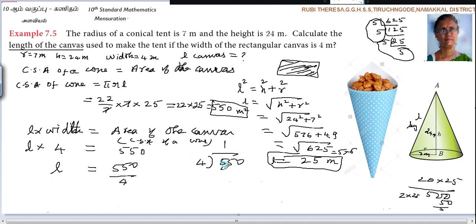550 divided by 4. 1 times 4 is 4, remainder 1. Then 5, 3 times 4 is 12, remainder 3. 30, 7 times 4 is 28, remainder 2. Keep point and add 0, 5 times 4 is 20. What is the answer? 137.5 meters.